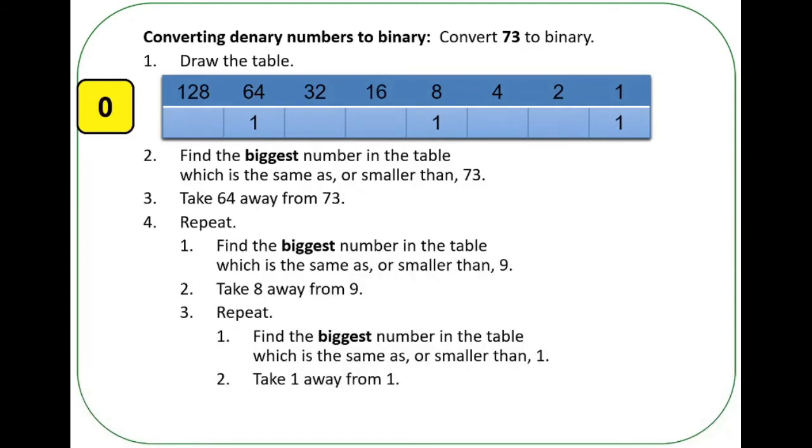So the last thing to do is you must remember to fill in zeros where there aren't ones. This is very important because quite often an exam question will say convert 73 to an eight-digit binary number. And if you simply say 1001001, you won't get the mark. You have to fill in all the zeros, even up to the eighth place.